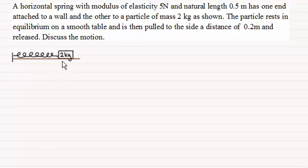The particle of mass 2 kilograms rests in equilibrium on this smooth table and then it's pulled to the side a distance of 0.2 metres and released. We're going to discuss the motion of this particle.